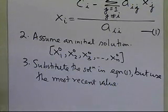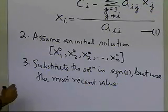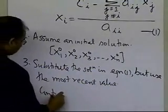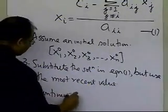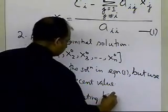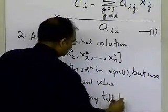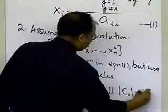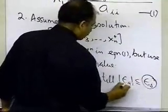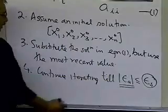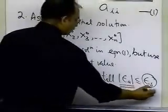Once you have done this, you're going to continue this process — continue iterating until the absolute relative approximate error is less than or equal to the pre-specified tolerance. This is the absolute relative approximate error, and this is the pre-specified tolerance.